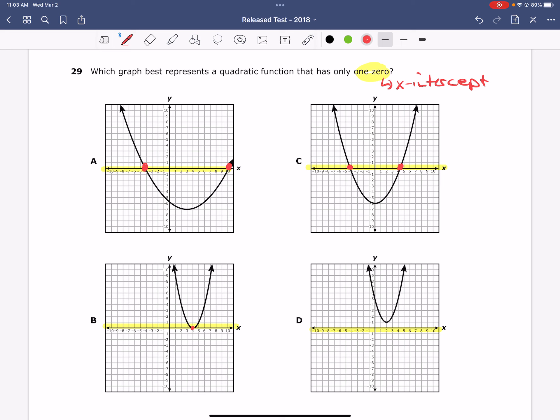In D, we are not touching the x-axis at all with this graph, and so therefore this function has no zeros or no x-intercepts. The answer that best represents a quadratic function with one zero is letter B.